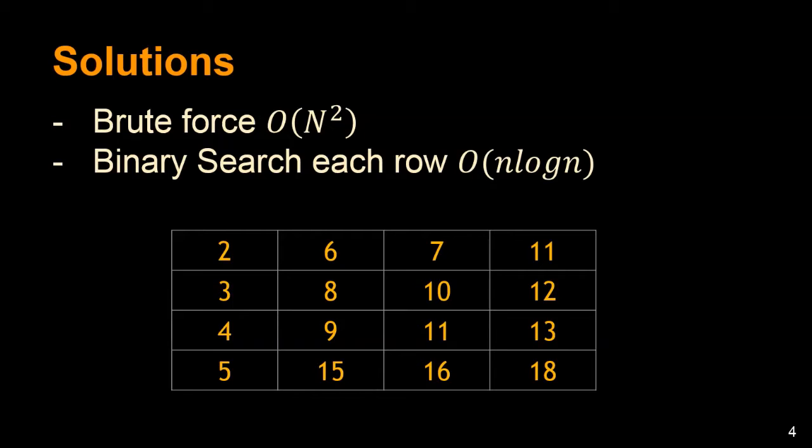The second approach is a pretty obvious approach where we would do a binary search for each and every row in the matrix, but that would result in order of N log N, where N is the number of rows that we have, and log N will be the time complexity for each row's binary search. But our target is to do it in order of N.